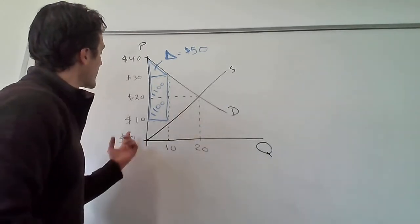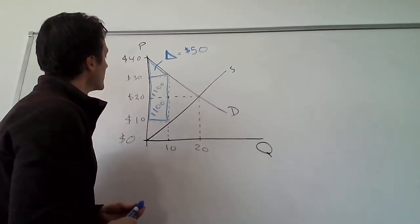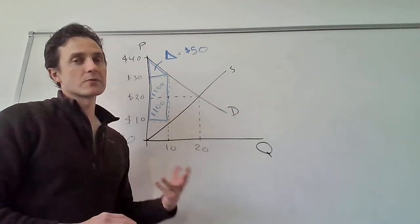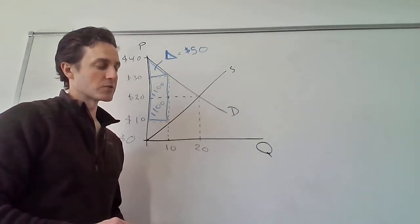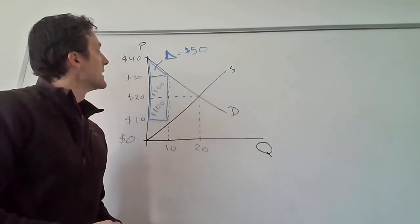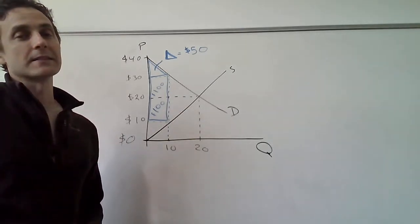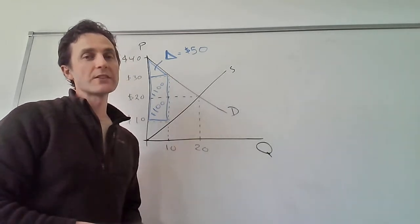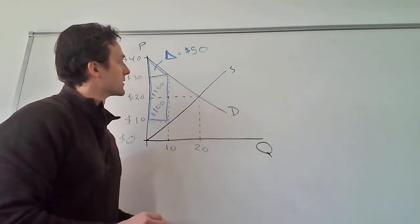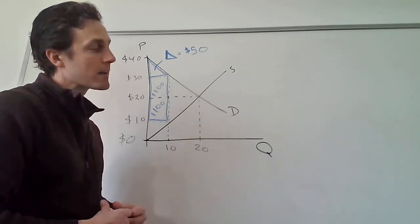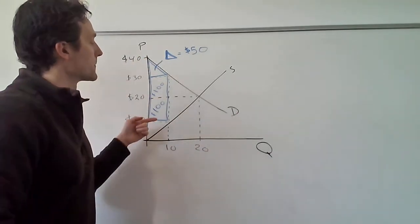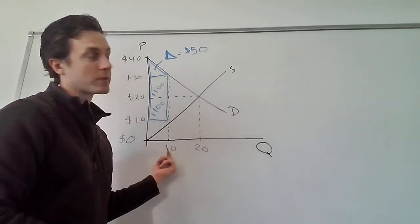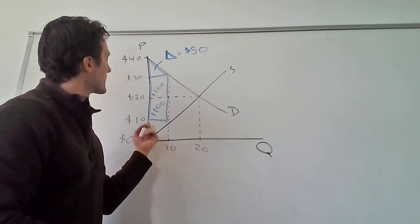Now we want to find the consumer surplus. Consumer surplus is measured by looking at the demand curve and finding the area below the demand curve and above the price, for everything up to the quantity consumed.